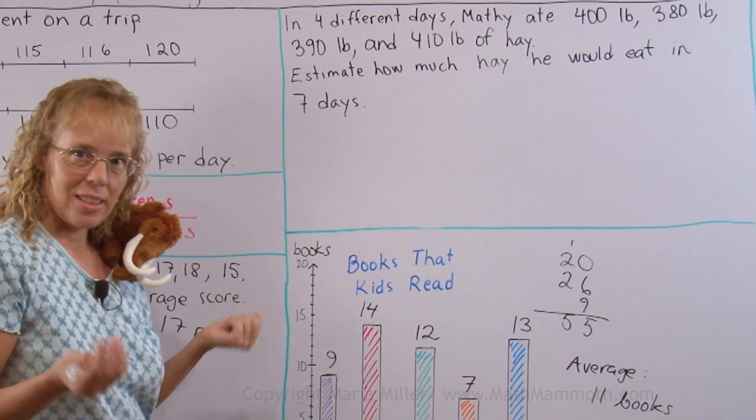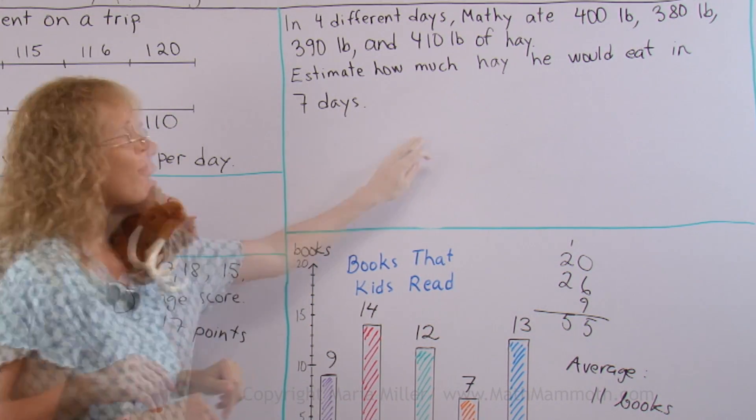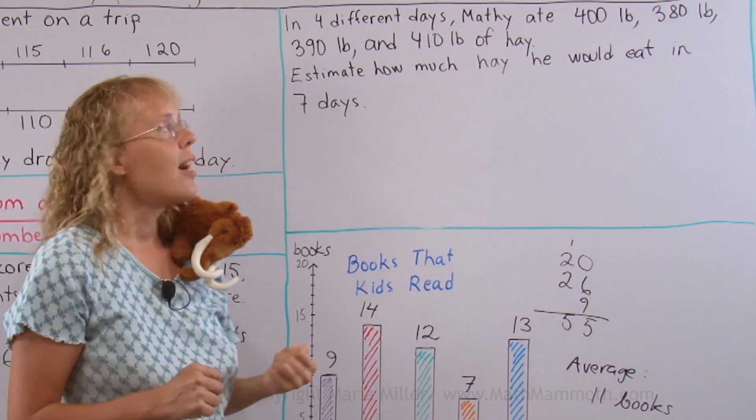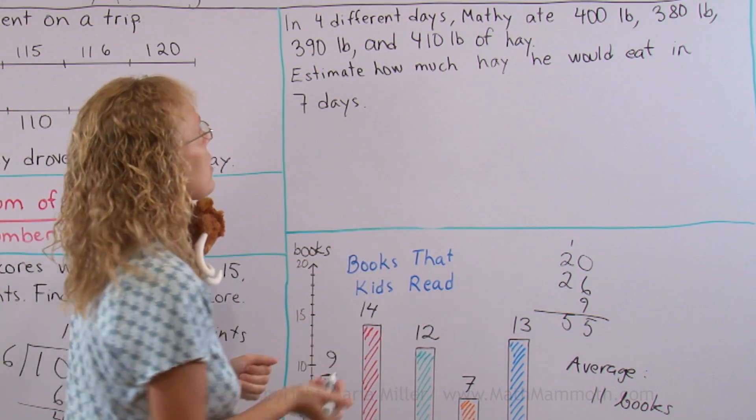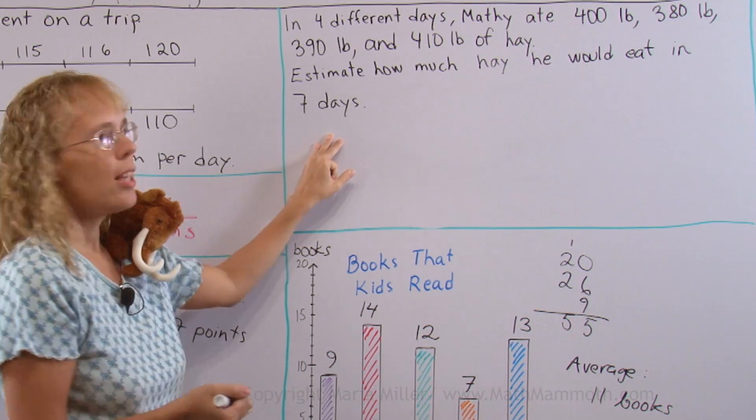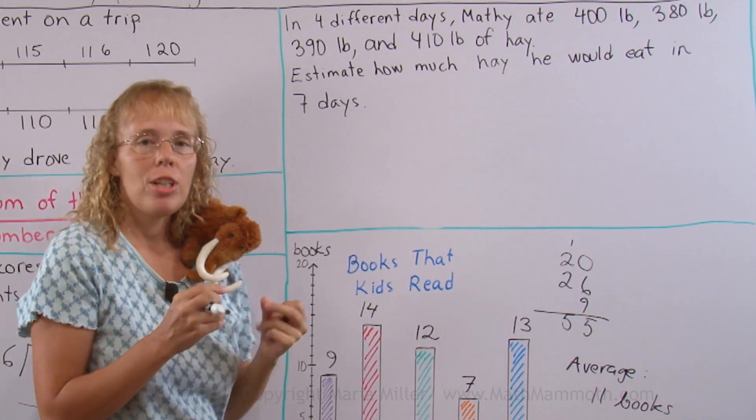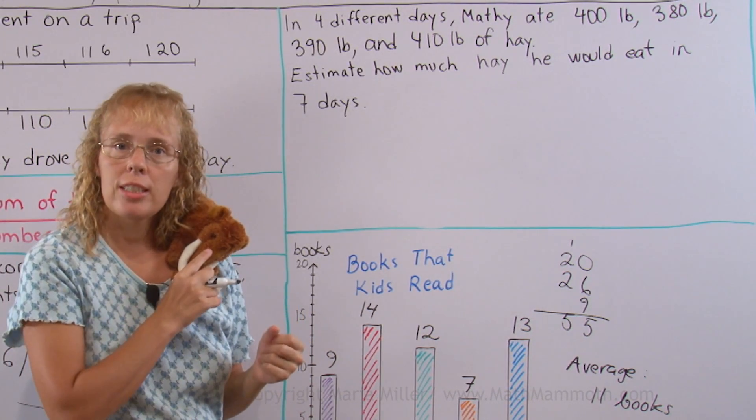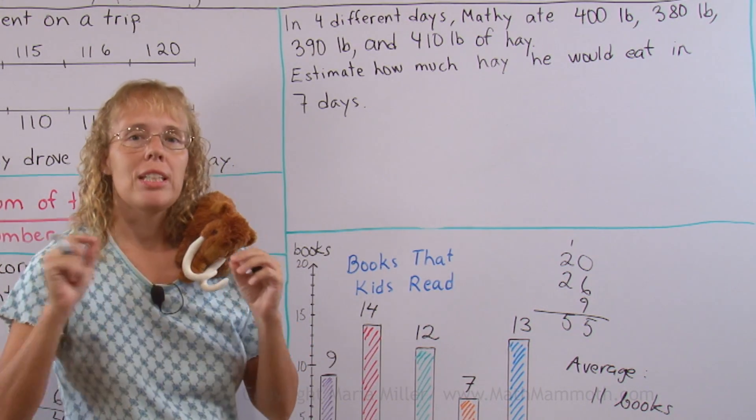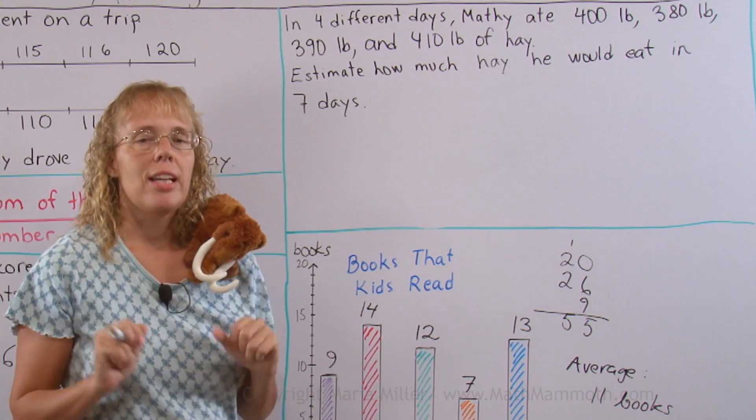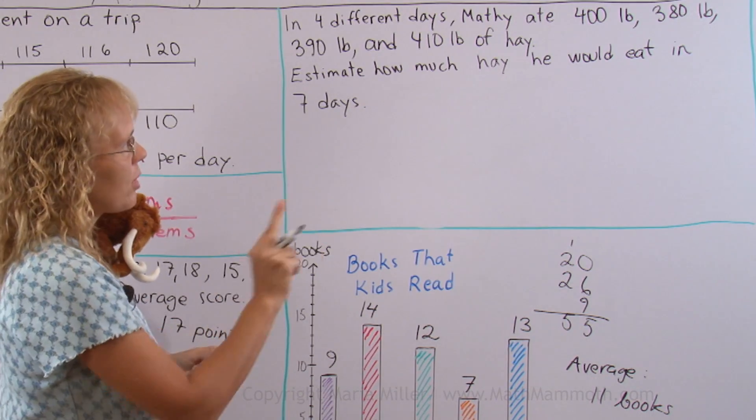Since this is in a lesson about average, we would expect that it has to do with average, right? And this is indeed the case this time. But it doesn't ask us the average. It doesn't ask us what the average is. It's asking us something totally different. How much hay he would eat in 7 days. But we can use the average. See, if we first find how much he eats on average in 1 day, then we multiply that times 7 to estimate how much he would eat approximately in 7 days. So let's find the average of what he eats because it gives us the amounts for 4 days.